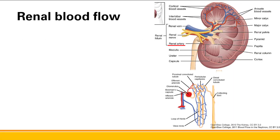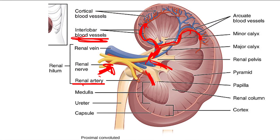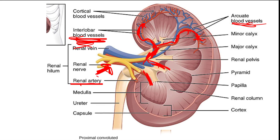Now let's talk about renal blood flow. We have the renal artery coming in from the aorta to supply the whole kidney. It branches into segmental arteries, which supply different segments of the kidney. These branch into interlobar arteries, which then branch into arcuate blood vessels, and those branch into interlobular arteries. So the sequence is: renal artery → segmental → interlobar → arcuate → interlobular.